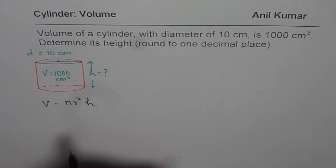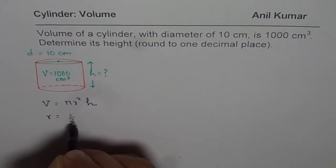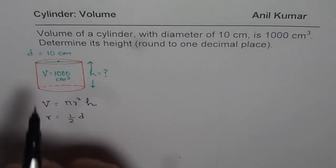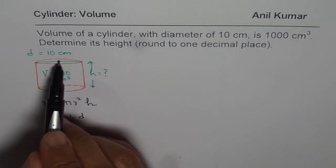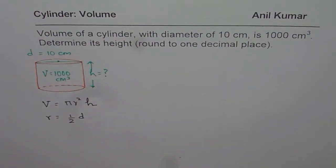Well as you know, radius is half of diameter. So diameter is this length, radius is from the center to the end of a circle. That is the radius.